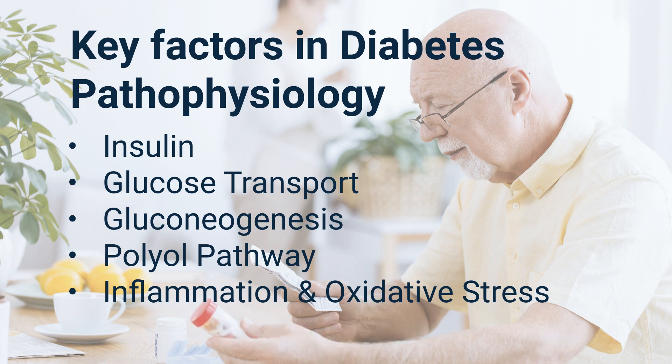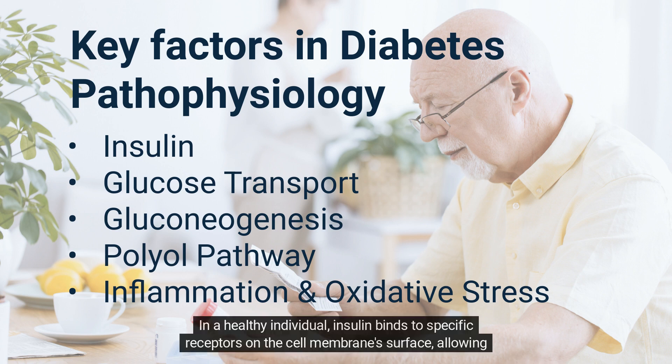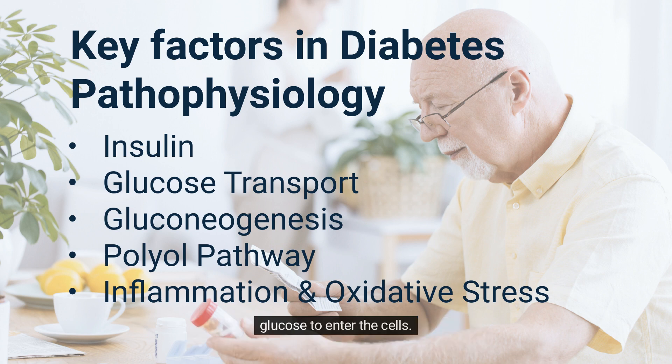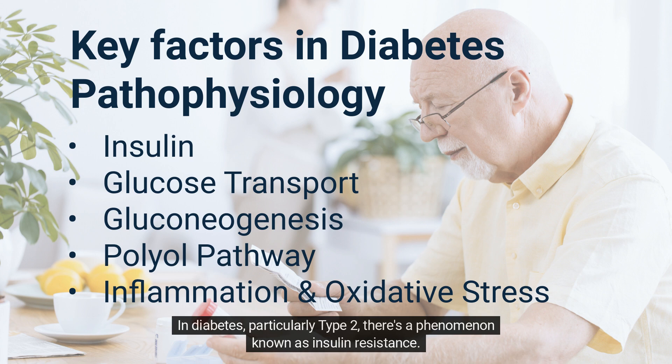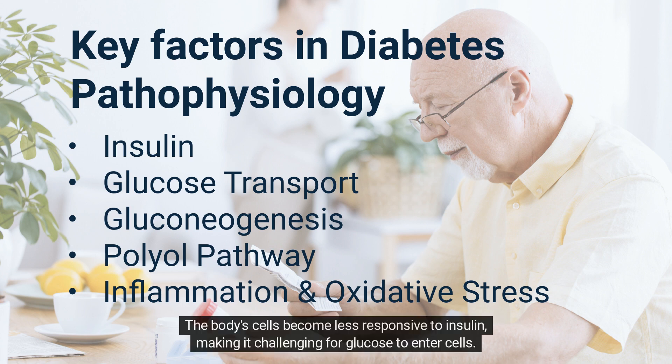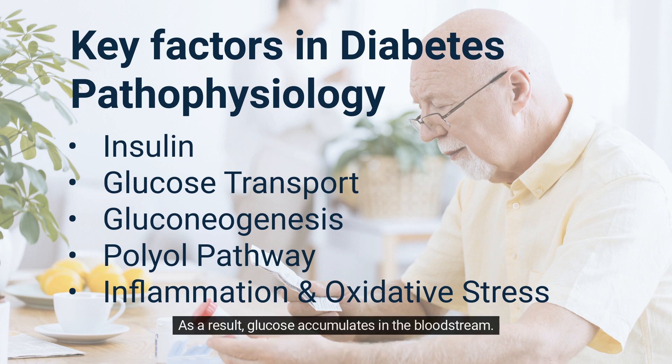Key factor 2 — Glucose Transport: In a healthy individual, insulin binds to specific receptors on the cell membrane's surface, allowing glucose to enter the cells. In diabetes, particularly type 2, there's a phenomenon known as insulin resistance. The body's cells become less responsive to insulin, making it challenging for glucose to enter cells. As a result, glucose accumulates in the bloodstream.